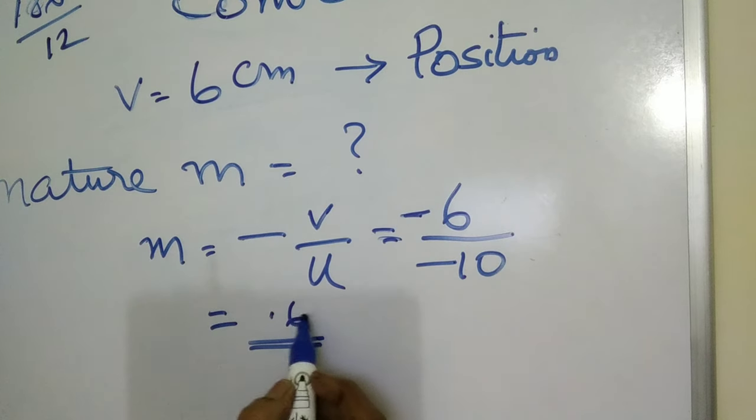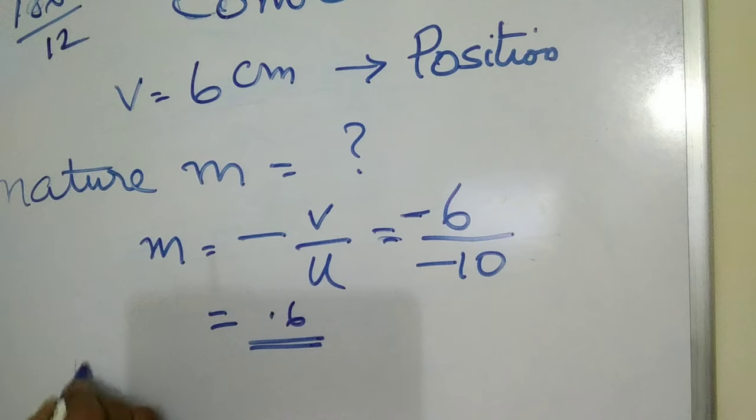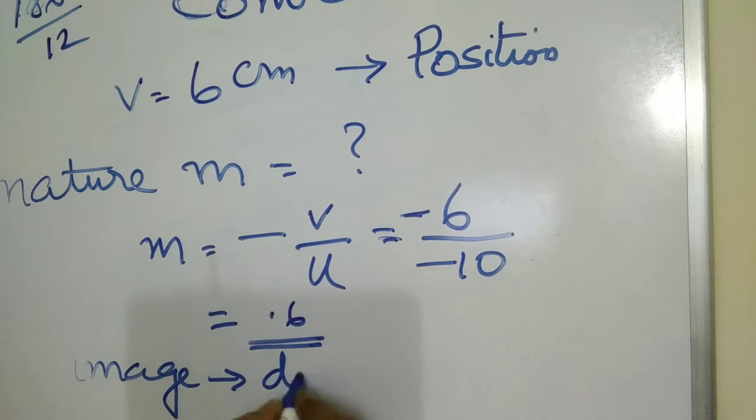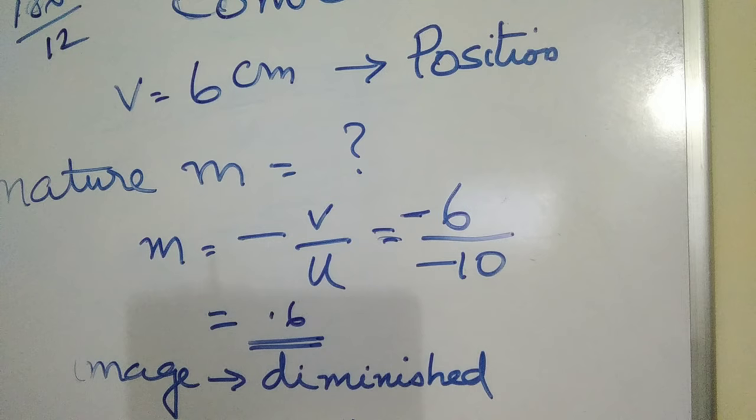So the magnification here is 0.6. What does it indicate? 0.6, less than 1, so the image is diminished, small in size. What does positive sign indicate? Virtual, erect. This is the nature of the image: diminished, virtual and erect.